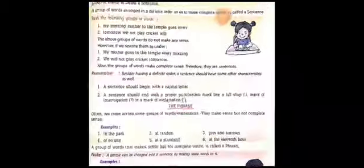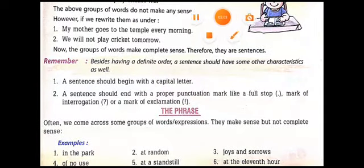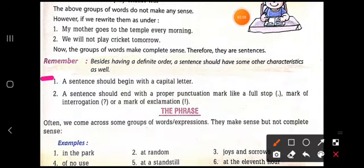Or sentence jo hota hai, kuch ek things we are to remember about the sentence. Jaise ki, a sentence would begin with a capital letter. Sentence jo hota hai, wo capital letter se start hona chahiye. And it should end with some proper punctuation mark. Toh, proper punctuation marks according to sentence you can use full stop or the question mark or the mark of exclamation jo hai, hum use karte hai. Toh, group of words jo complete meaning de, wo sentence hota hai.